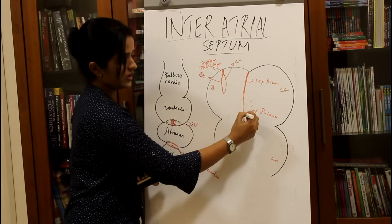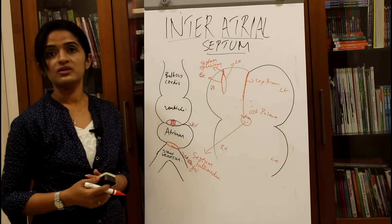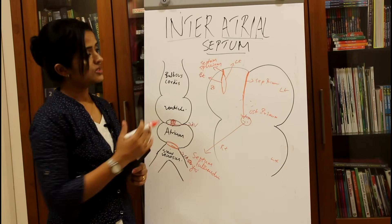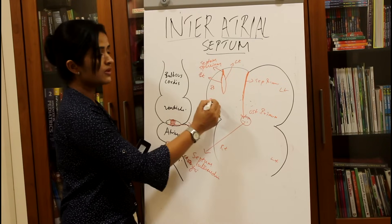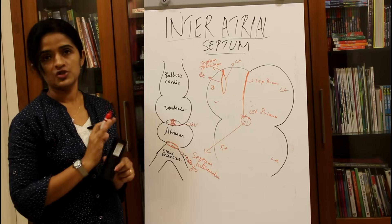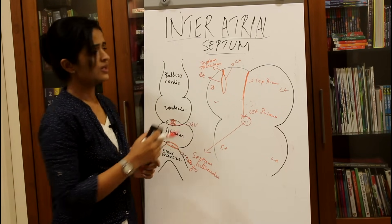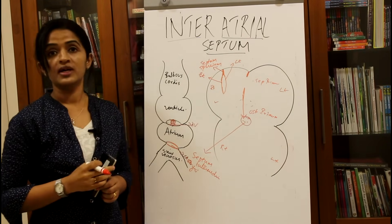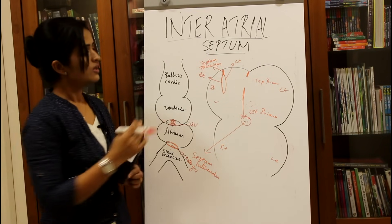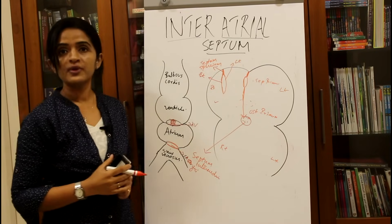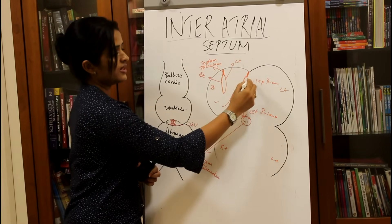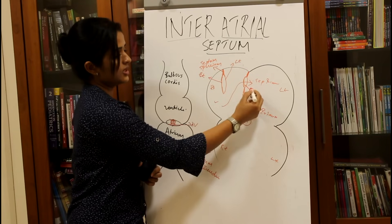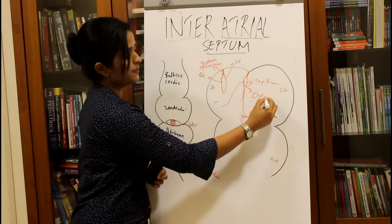As the septum primum gradually moves downward and fuses with the septum intermedium, the ostium primum is gone. However, since blood from the right atrium must still reach the left atrium, some cells in the upper part of the septum primum undergo programmed cell death — apoptosis — forming another opening in the upper aspect for blood flow from the right atrium to the left atrium.